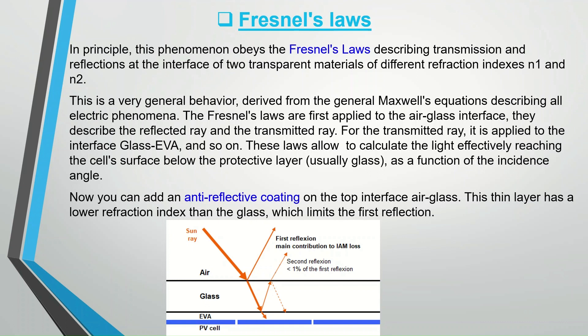You can add an anti-reflective coating on the top interface air-glass. This thin layer has a lower refraction index than the glass, which limits the first reflection. You can see the below diagram for Fresnel's laws.